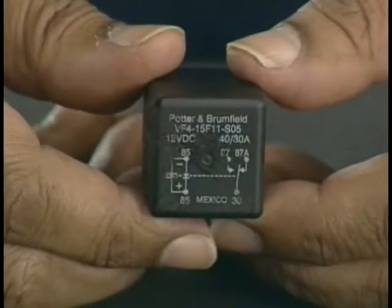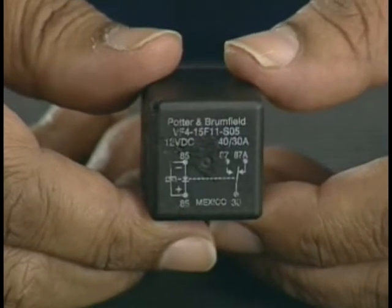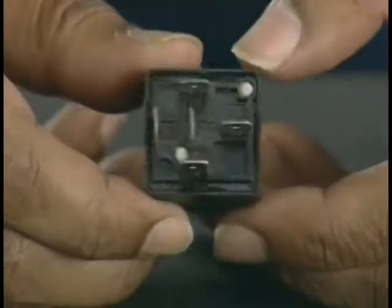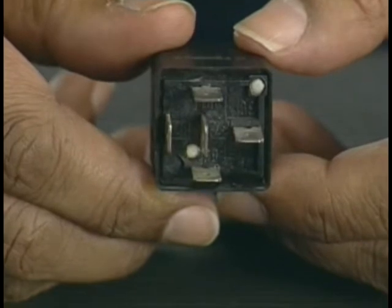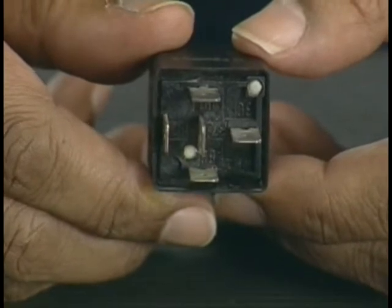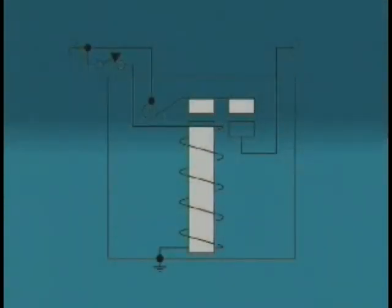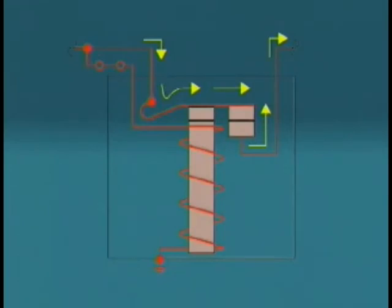The electromagnetic compressor clutch requires a high current draw to engage the clutch. Because of this, most systems use an air conditioning relay. Relays are inexpensive ways to control high current circuits through a lower current circuit. Relays are electromagnetic switches — most relays are normally open. When a low voltage is applied to the coil side of the relay, a magnetic field is created and the contacts inside the relay are pulled closed.